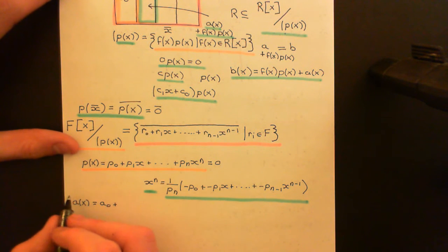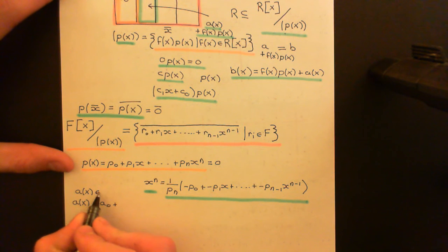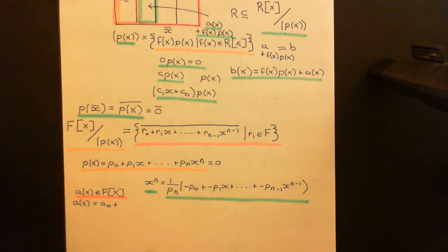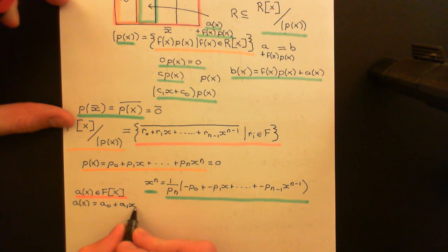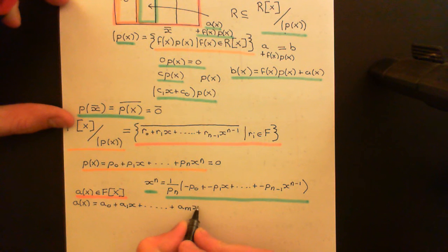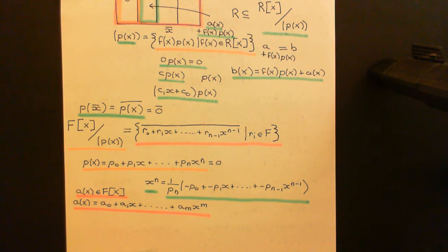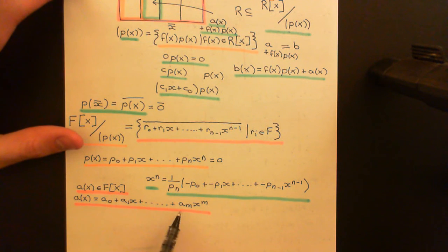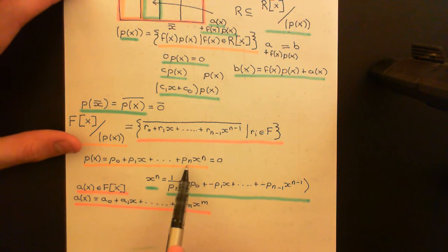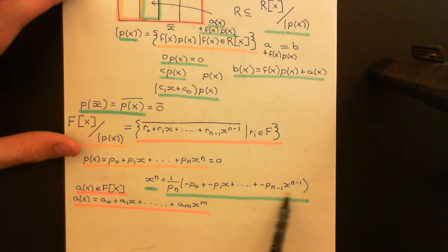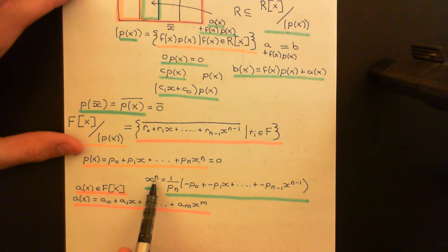So A of X is A₀ plus A₁X plus all the way along to Aₘ X to the M, where M could be much bigger than N. My claim is that we can show this is in the same coset as some polynomial of degree less than N — at most degree N minus 1. The reason is that for any power of X greater than or equal to N, we can substitute in the expression for X to the N.